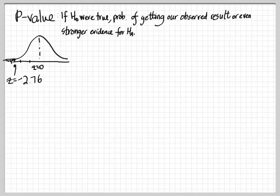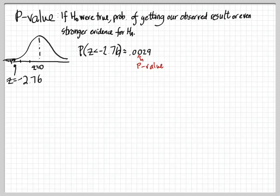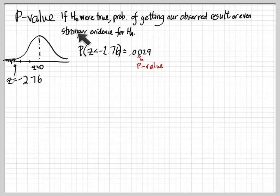When I do my norm CDF calculation, I get a p-value of 0.0029. That's my p-value, and this number is what we use to make our decision. If this is small, it gives us strong evidence against the null hypothesis and in favor of the alternate. The line of thought is: if the null were true, what we got — our observed value — is extremely unlikely. We would only see a value this low or lower about three times in a thousand if the null were true.